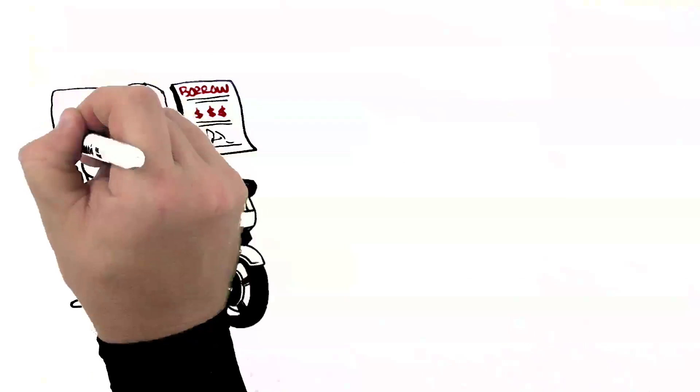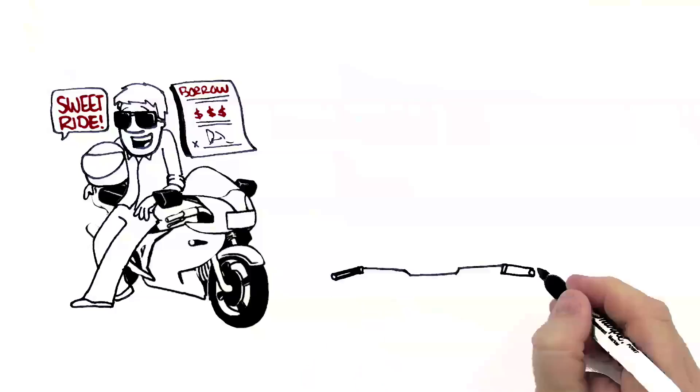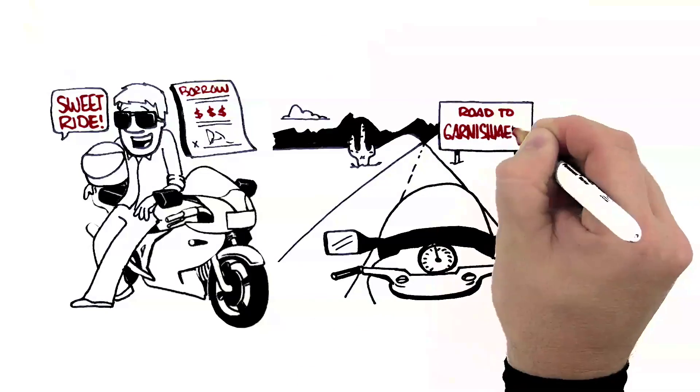Check out Ted's new motorbike. He had to borrow to get it, but that's one sweet ride. Ted doesn't know it, but he's on the road to garnishment.